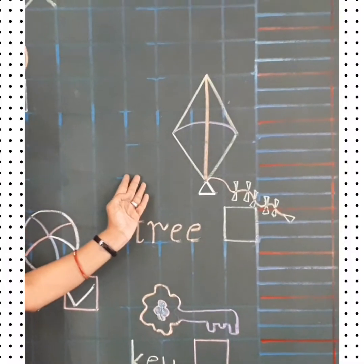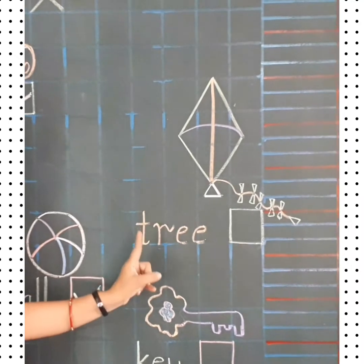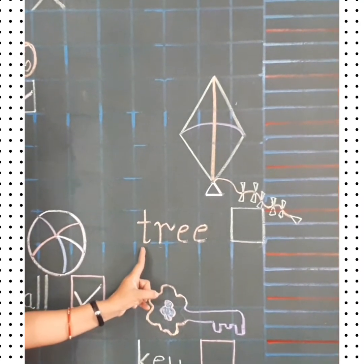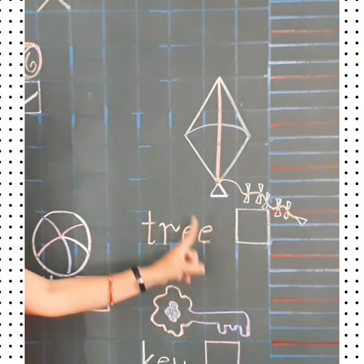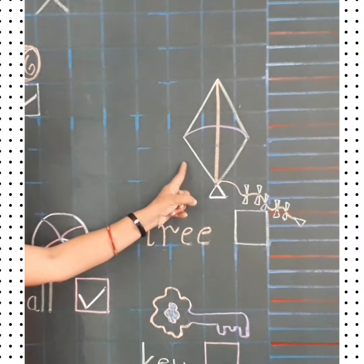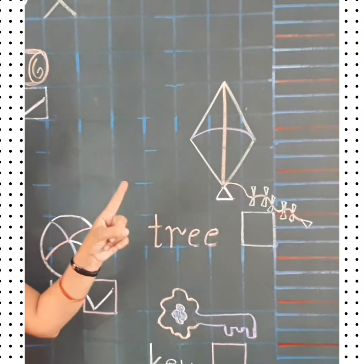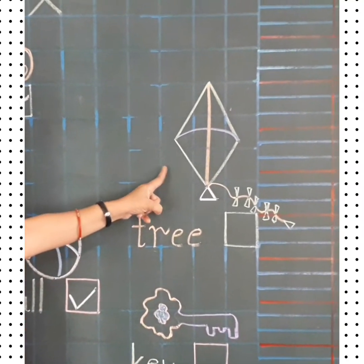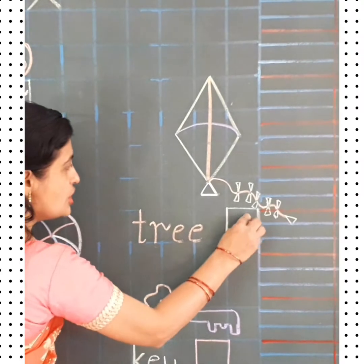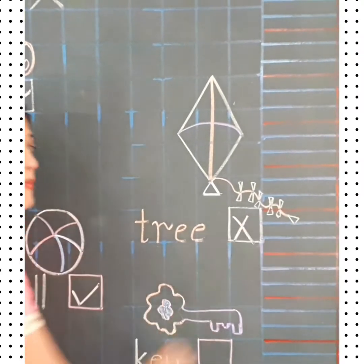And now tell me children, what is this? This is a picture of a kite. And here which spelling is written? T-R-E-E tree. Is the spelling matching with the picture? No. The spelling of kite is K-I-T-E kite. So we will put cross in this box.